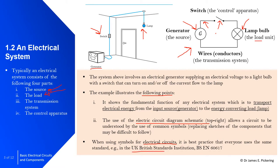In our case we follow the UK British Standards Institution BS EN 60617. We also have the transmission system — effectively the wires and conductors. And finally the control apparatus, in this case just an on/off switch, though control could be more exotic — but here it simply enables you to switch the supply to the lamp on or off.